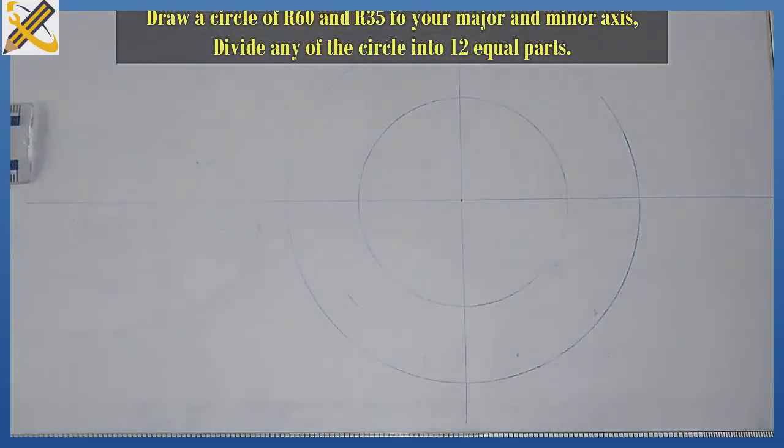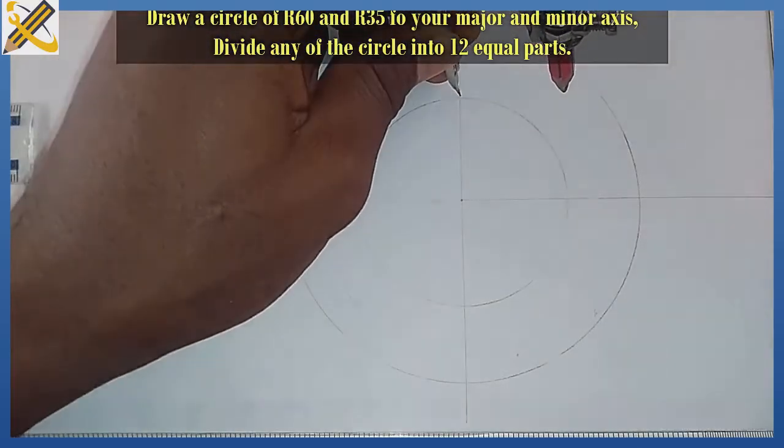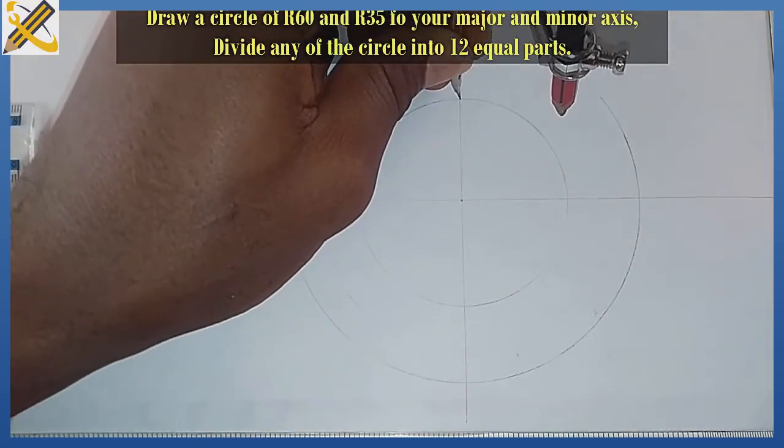After doing that, the next procedure is to divide either of the circles into 12 equal halves.